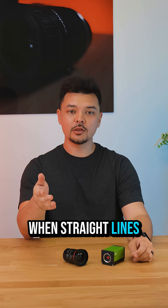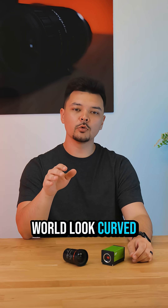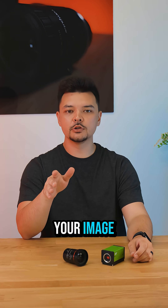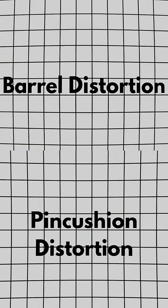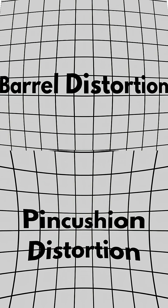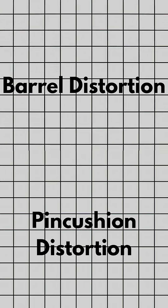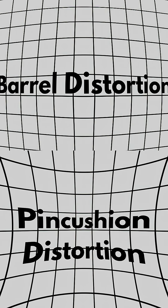Lens distortion happens when straight lines in the real world look curved or warped in your image. There are two common types: barrel and pincushion. Barrel distortion makes edges bulge out; pincushion pulls them in.